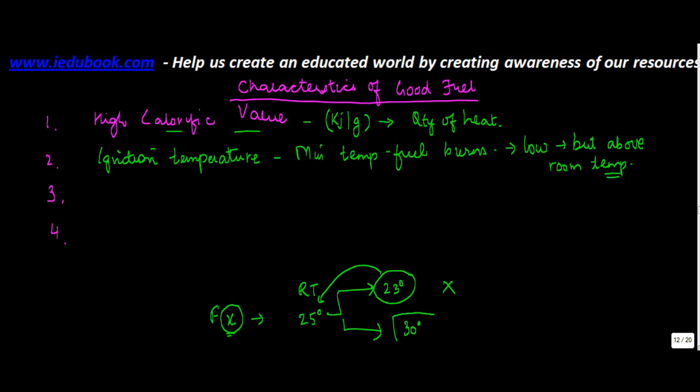So let's say if it is 30 degrees and the room temperature is 25, this is not likely to catch fire. Therefore the ignition temperature of a fuel should be low but above the room temperature, otherwise it will run the risk of catching fire.